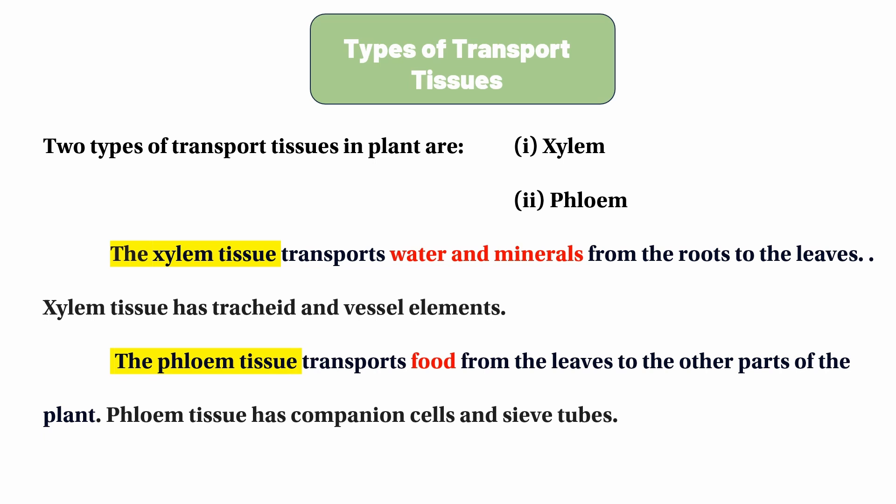Phloem tissue is transferred from the leaf to other parts of the plant. Phloem tissue has companion cells and sieve tubes. Phloem parenchyma and phloem fiber are components of phloem tissue, which differs from xylem tissue in structure and function.